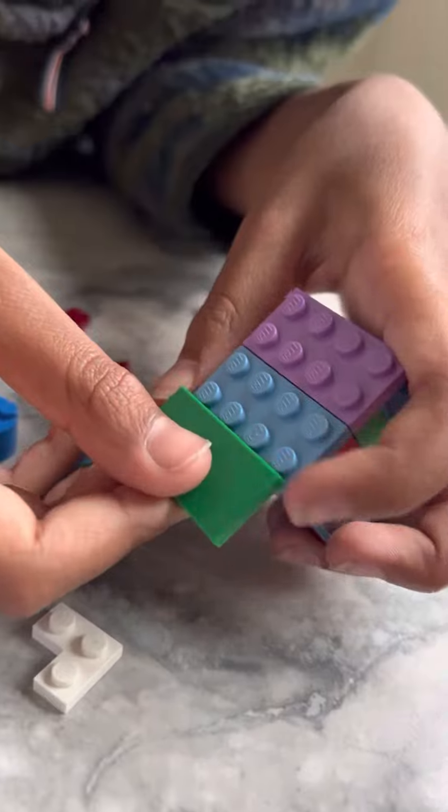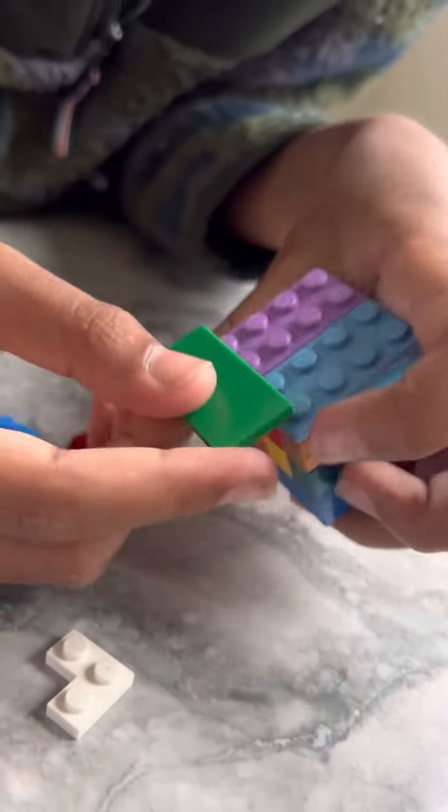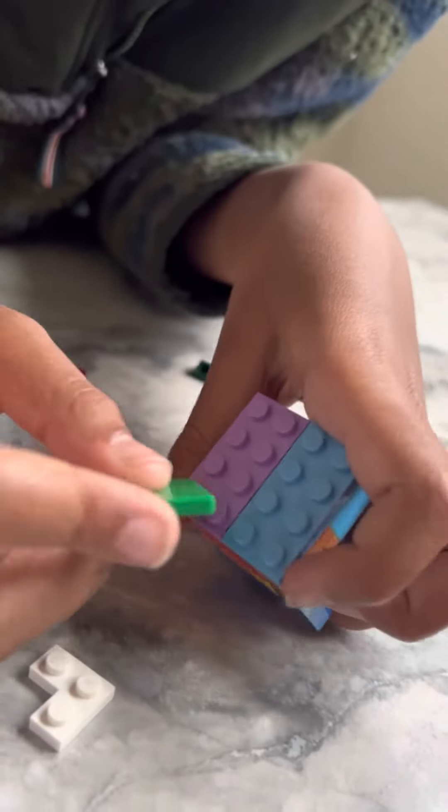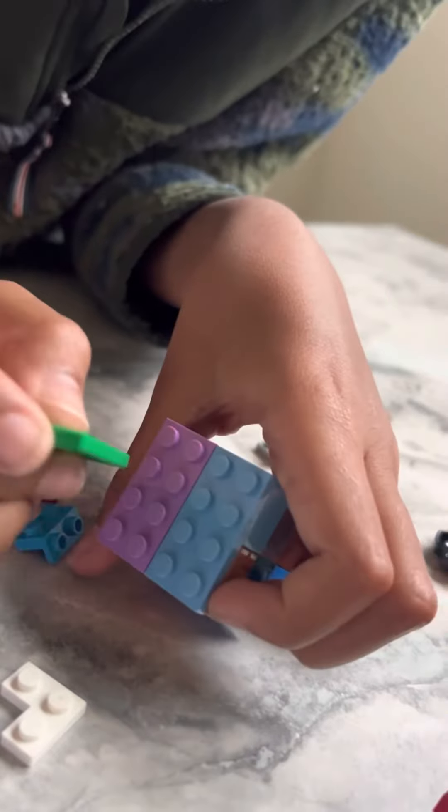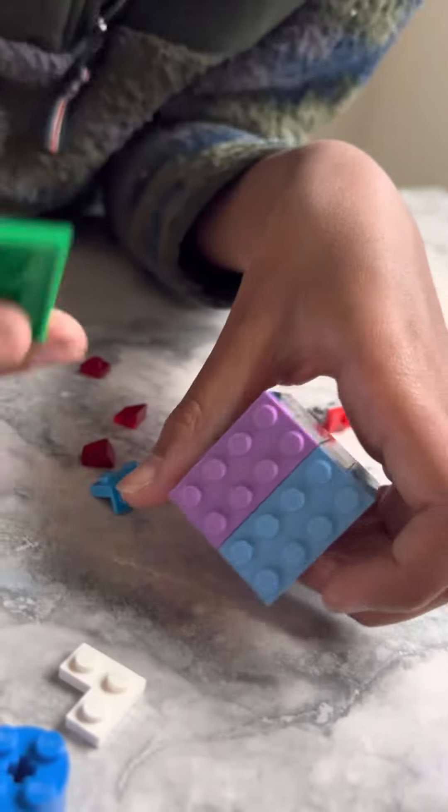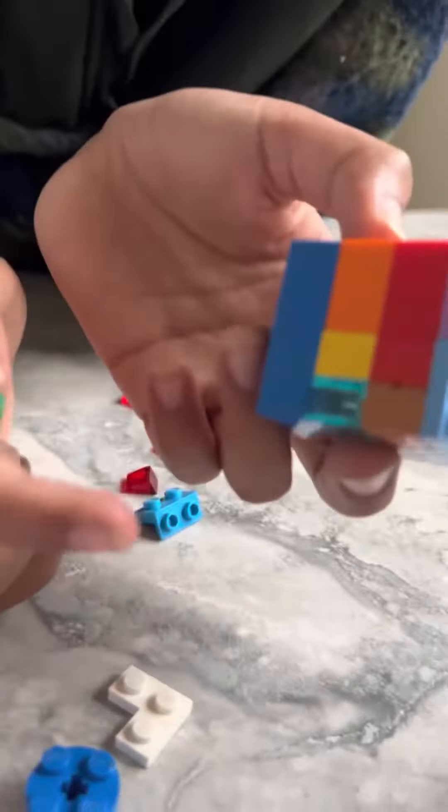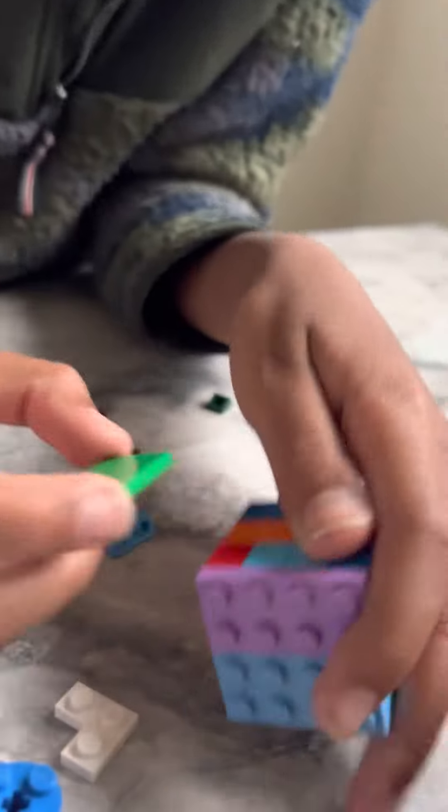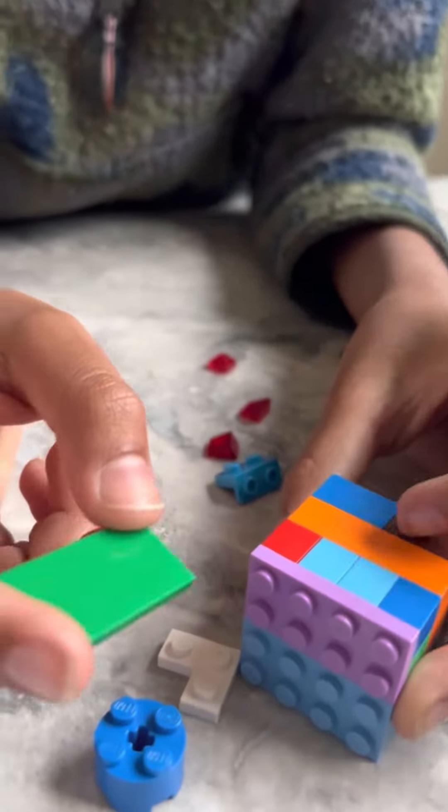This is four studs by four studs, which you can clearly see by these studs on each LEGO brick, except tiles. The tricky part is getting the side length because it's not exact.